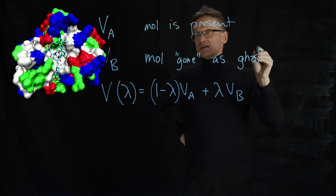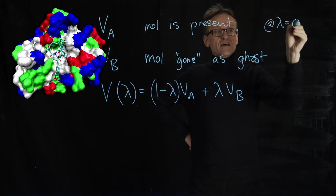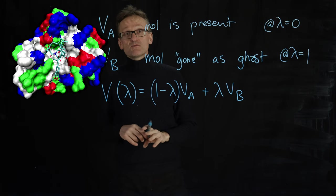What that will mean is that when lambda equals zero I have VA and when lambda equals one I have VB, and then I interpolate between them.